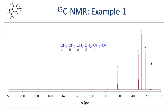Let's take a look at a few C13 NMR spectra. Here we have 1-pentanol. There are no mirror planes in this molecule, and there's no way to interchange one carbon for another via free rotation. So those five carbons are all chemically unique and will show five resonances in the spectrum — and that's exactly what we see: five peaks, five resonances, one for each unique type of carbon.